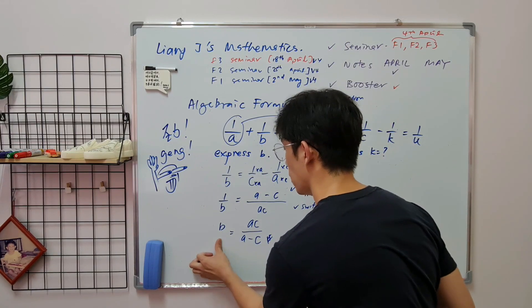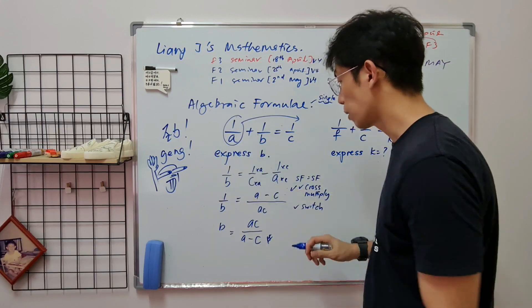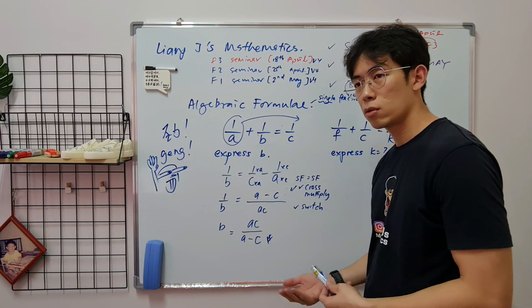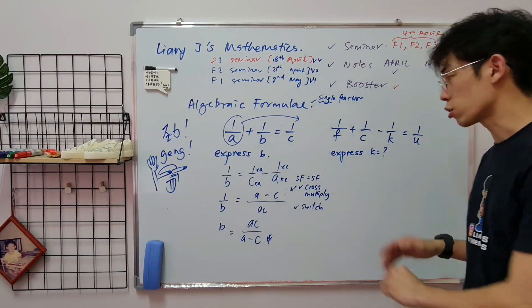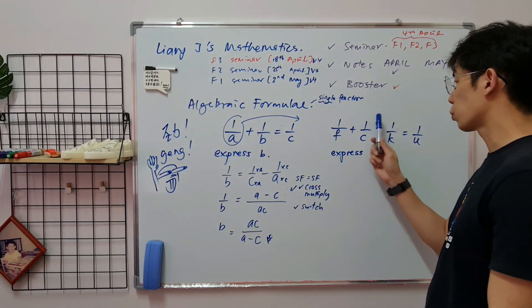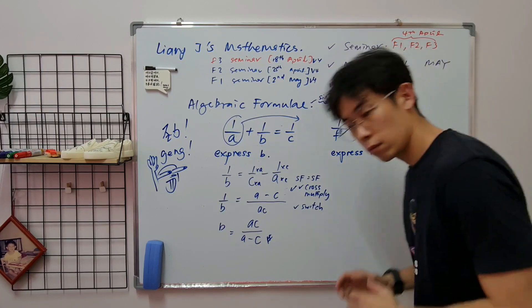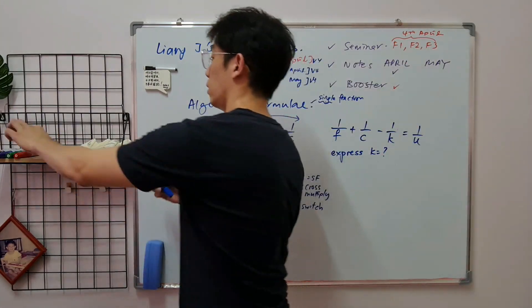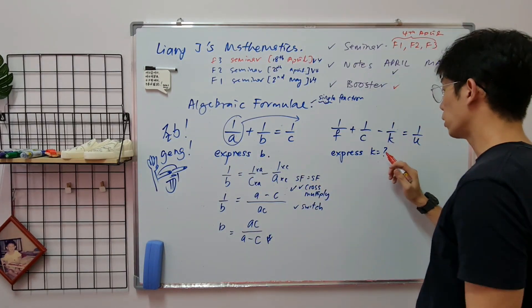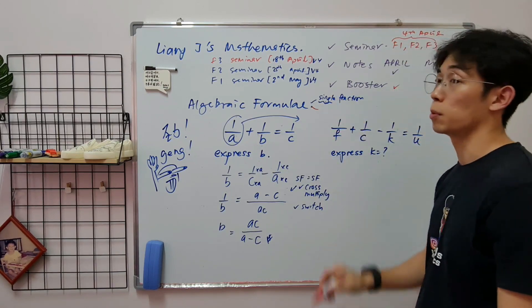That's how you get the answer. This is something not that popular because I don't really see it in most of the exams. Let's come to this question. 1 over F plus 1 over C minus 1 over K equals to 1 over U. You don't say something like, I want to get K so the rest I bring to the other side.